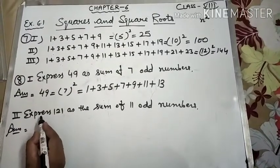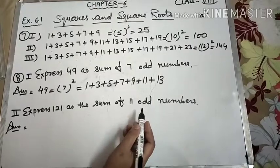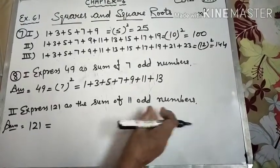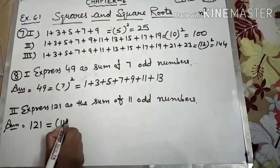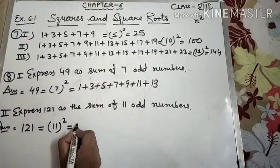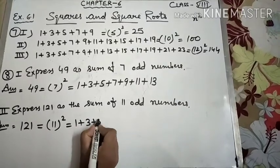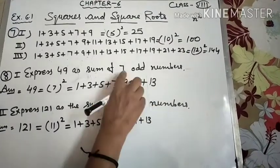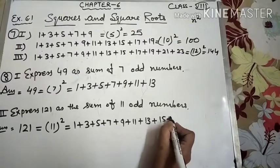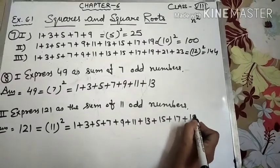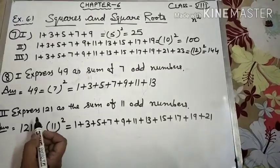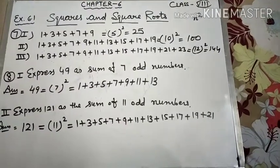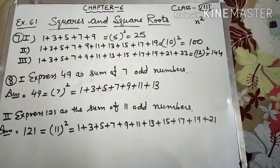Now come to the next part. Express 121 as the sum of 11 odd numbers. We have to write 121 as sum of 11 odd numbers. Let's take 11 odd numbers: 1 + 3 + 5 + 7 + 9 + 11 + 13, which is 7, then 4 more: 15, 17, 19, 21. So we have written 121 as the sum of 11 odd numbers. Questions 7 and 8 are complete.